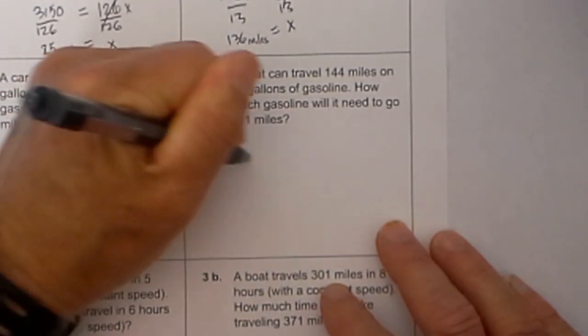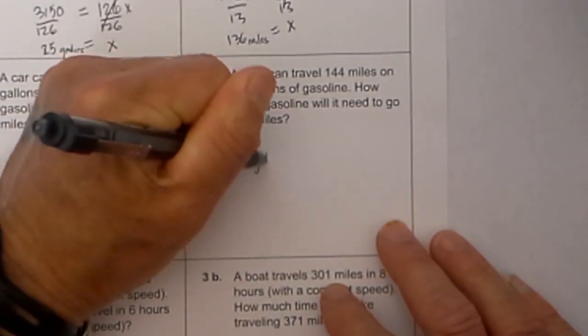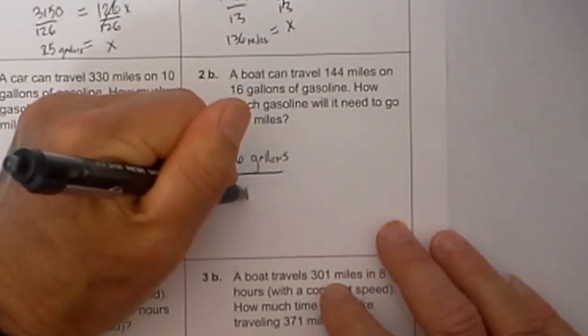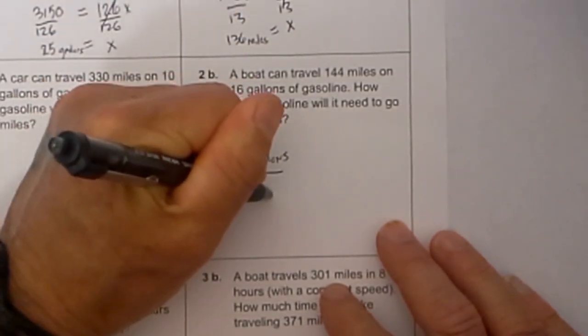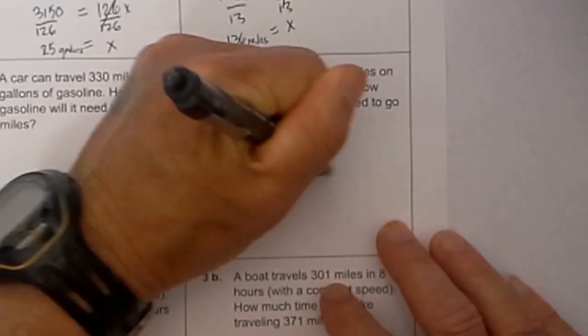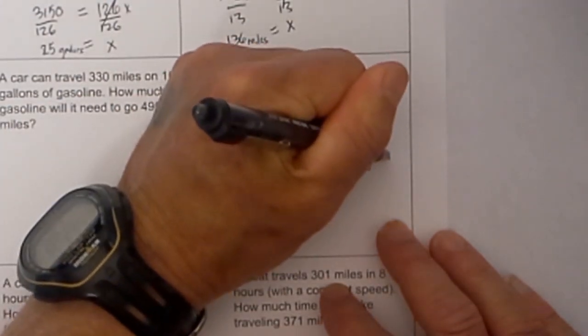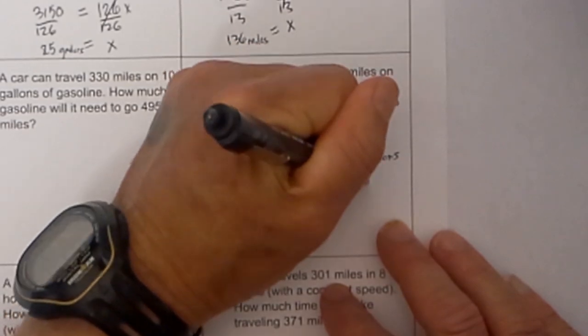This time I am going to put gallons on top. We know we have 16 gallons, and with 16 gallons it can travel 144 miles. I set the other fraction up exactly the same, gallons on top and miles.